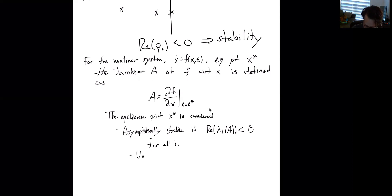Also unstable if the real component of lambda i is greater than zero for all i. And then just for completeness.